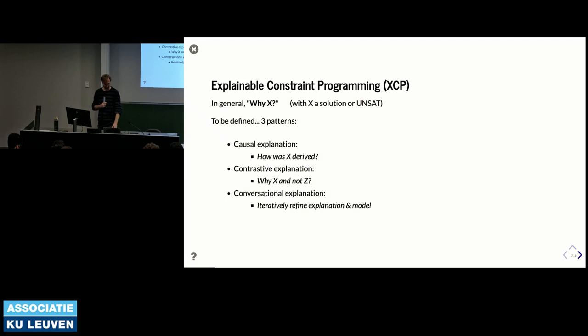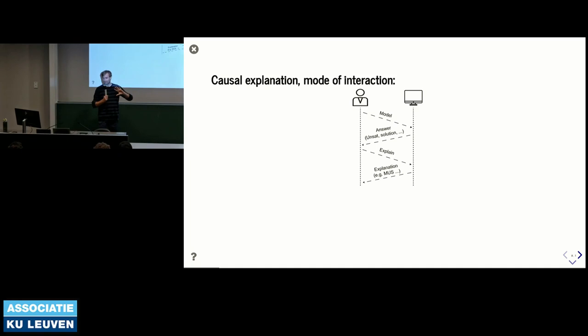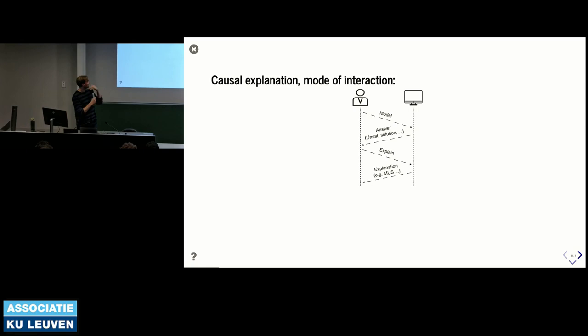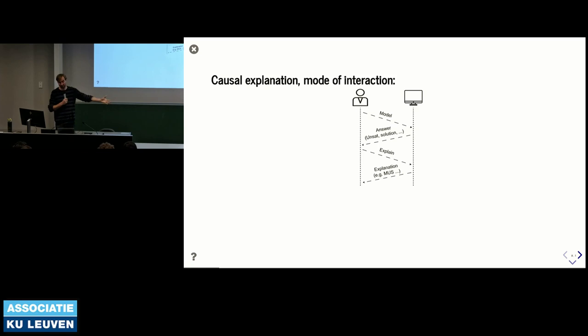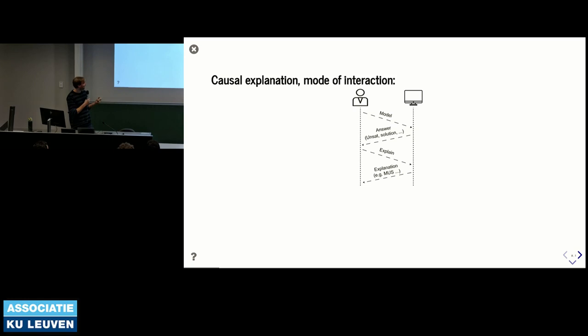For causal explanations, the interaction mode is: a user specifies a constraint model and gives it to the system. The system computes an answer—either no solution or a specific solution—and the user asks 'explain why or why not.' For example, if there is no solution, the explanation could be a minimal unsatisfiable subset. That is the end of that particular interaction.